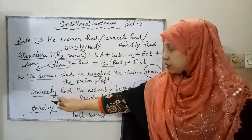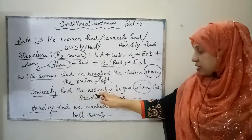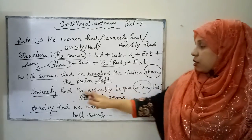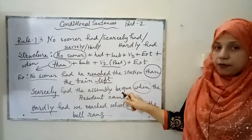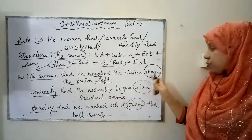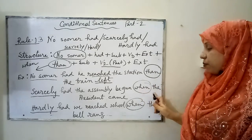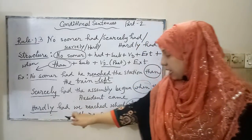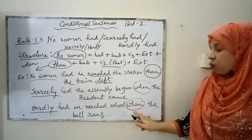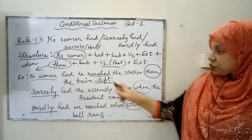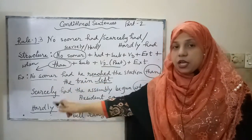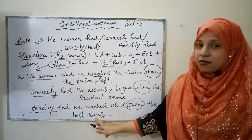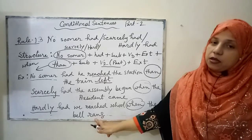Example with 'scarcely': 'Scarcely had the assembly begun when the president came' — note V3 form 'begun' and 'when' is used, not 'then.' Example with 'hardly': 'Hardly had we reached school when the bell rang' — again 'when' is used, and 'rang' is the V2 (simple past) form of 'ring.' Remember: only 'no sooner' uses 'then'; 'scarcely' and 'hardly' always use 'when.'